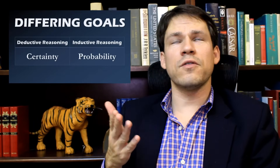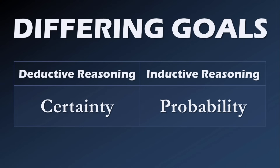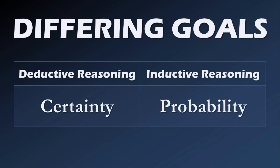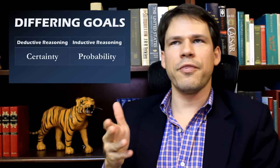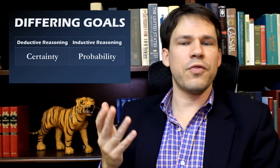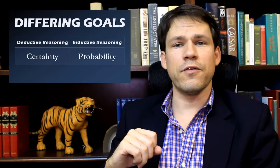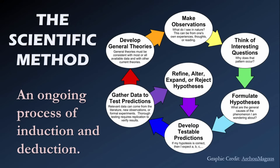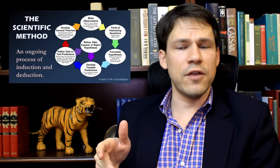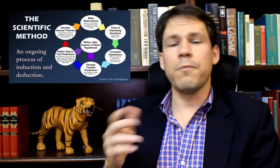Keep in mind that certainty is not even the goal of inductive reasoning. While deductive reasoning aims to arrive at certainty, inductive reasoning is only a function of probability - saying that we can infer that there is a high probability that something is true. Not that we can ever be 100% certain of anything, because science changes and evolves over time. The scientific method is a repeated process of induction and deduction. It's not that one of these reasoning forms is better than the other - they're different.